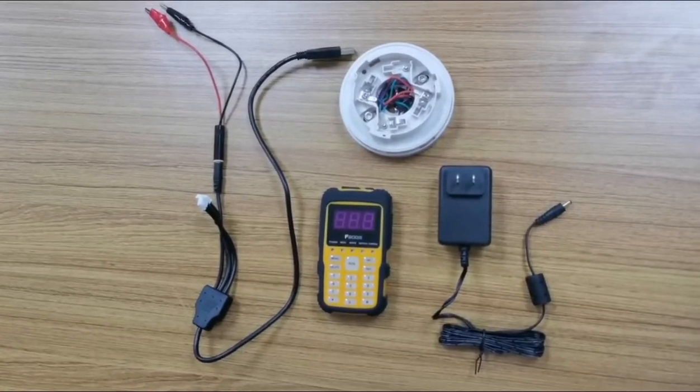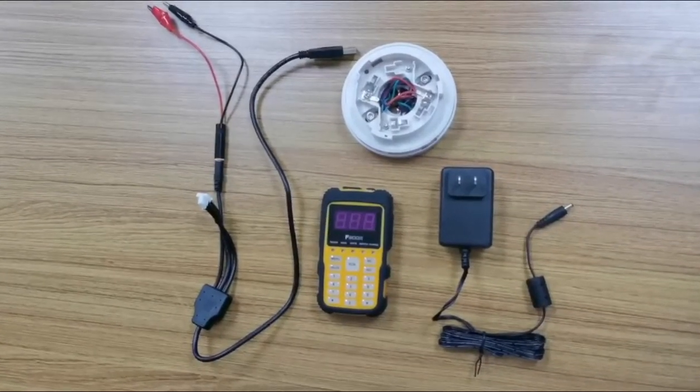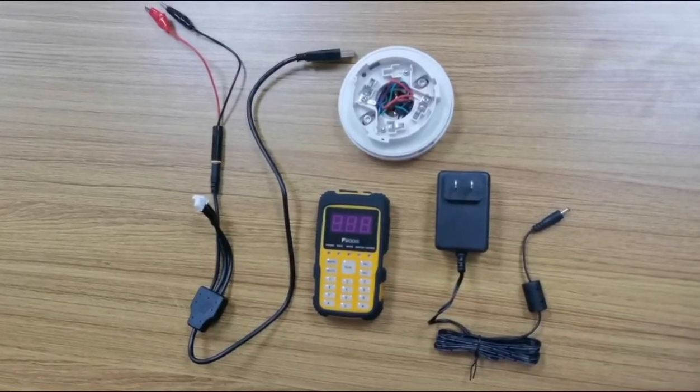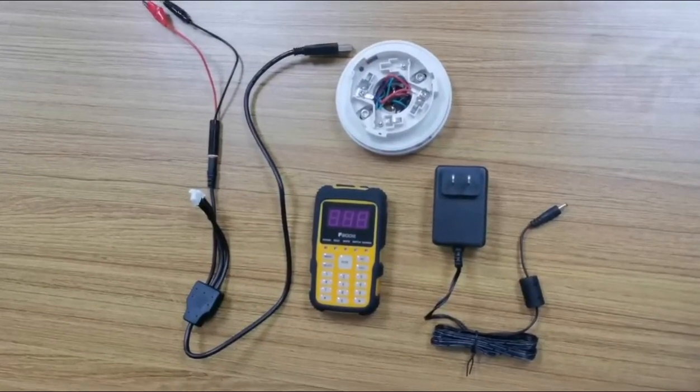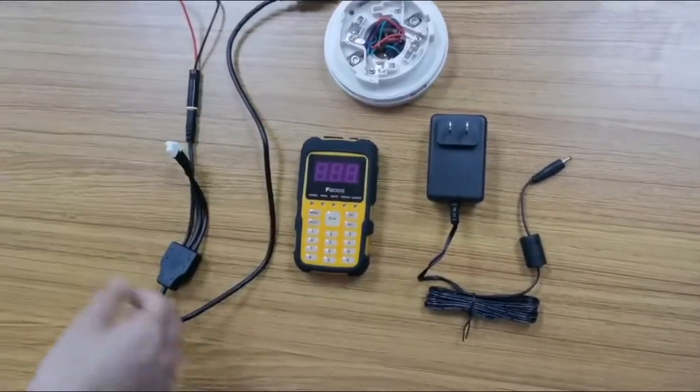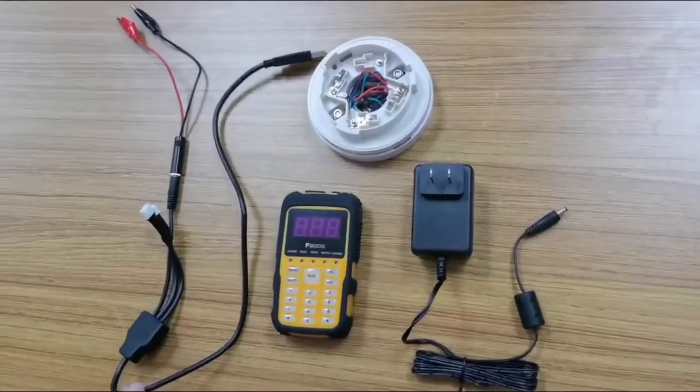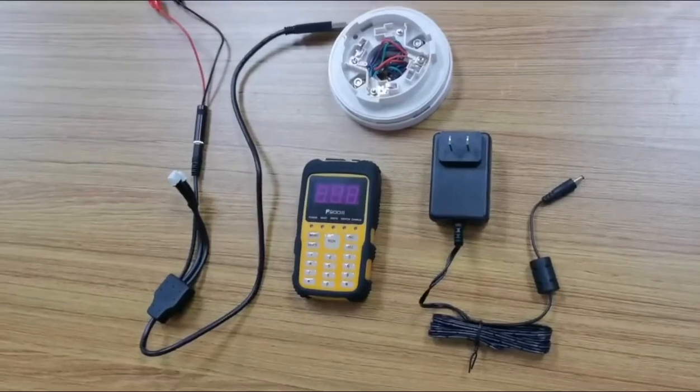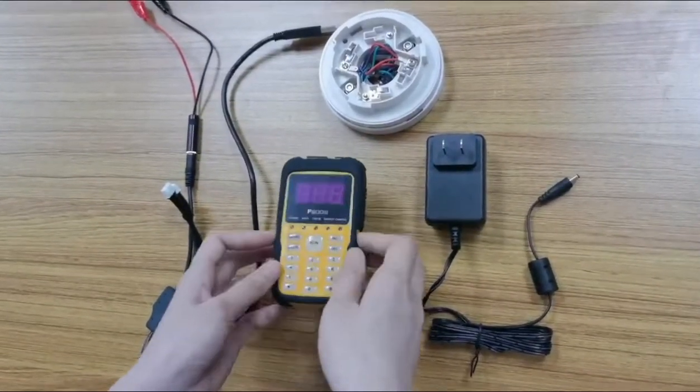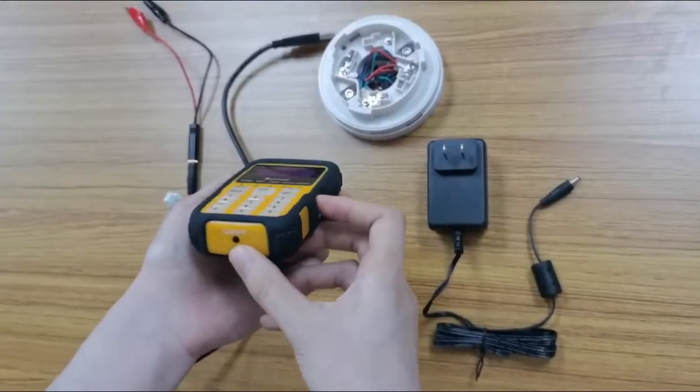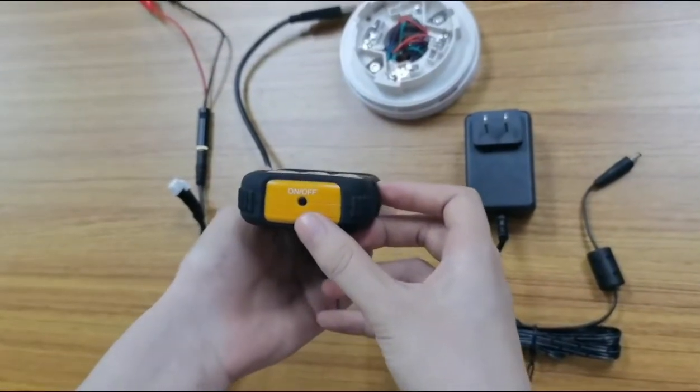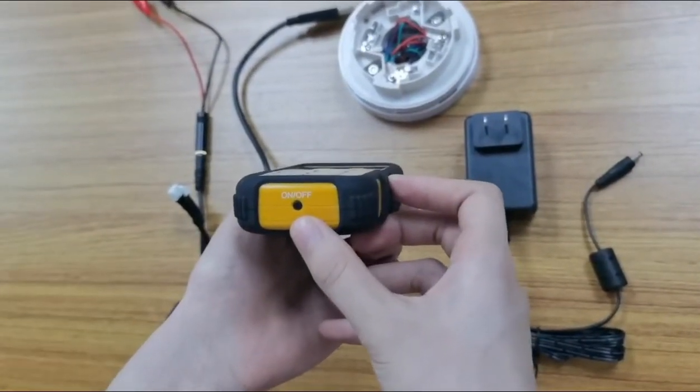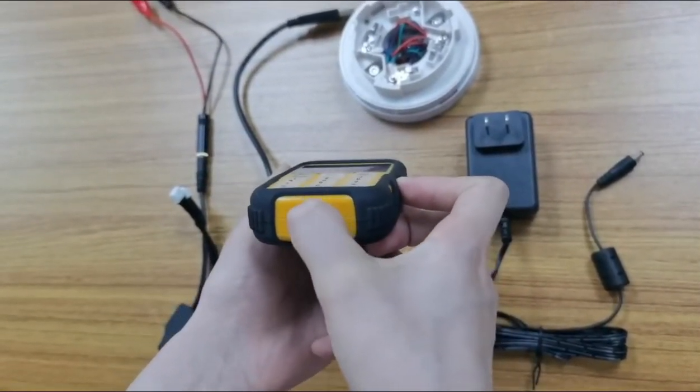Let me introduce how to program the devices to the FP300 adjustable fire alarm system. Now you can see this is the programmer device, totally four parts. You can check this, this is the on and off switch.